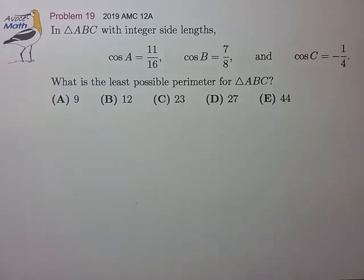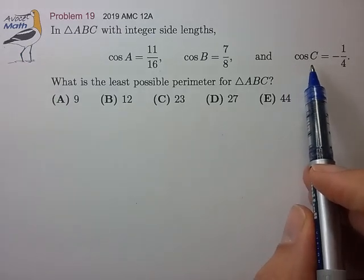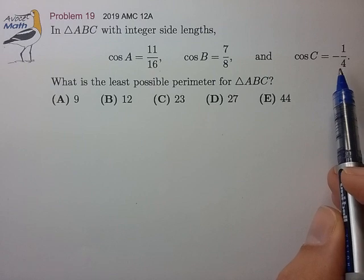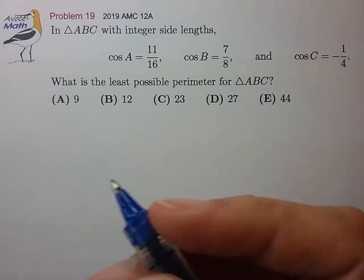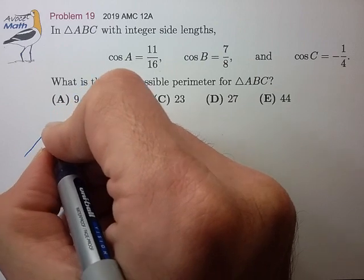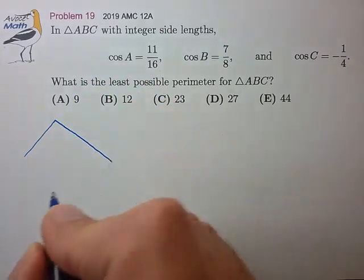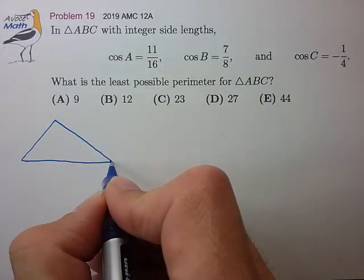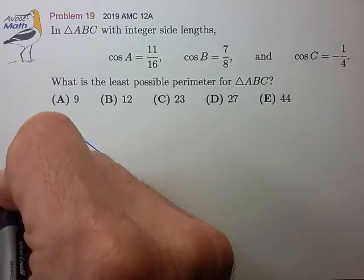Alright, let's draw this out. We have cosine C as a negative number, so that angle is greater than 90 degrees, so we'll try to get this about right. I'm thinking our triangle looks something like this.